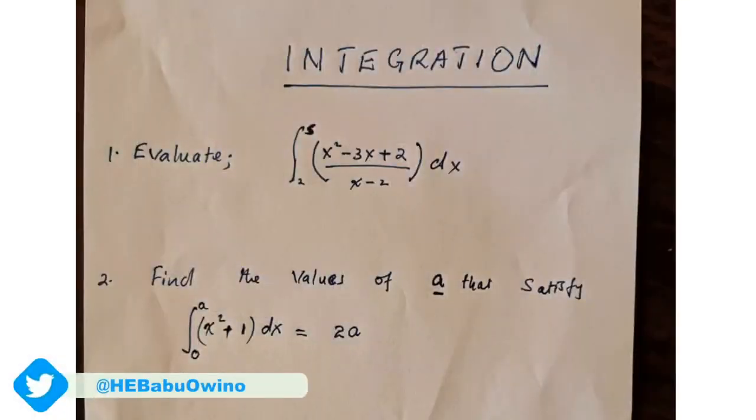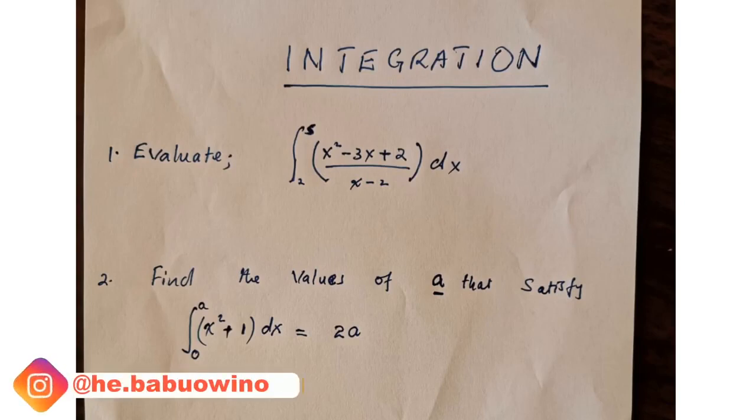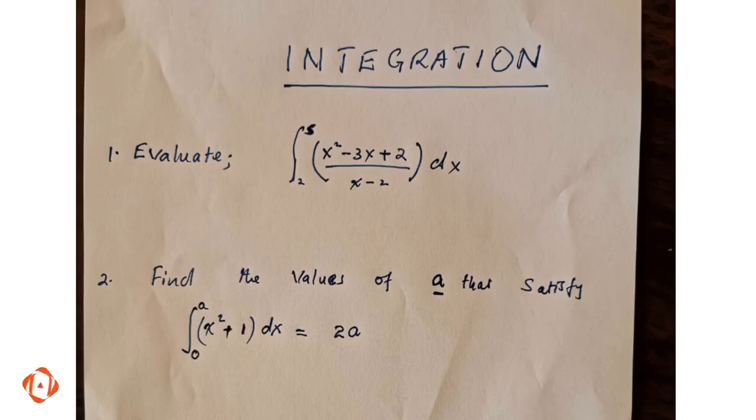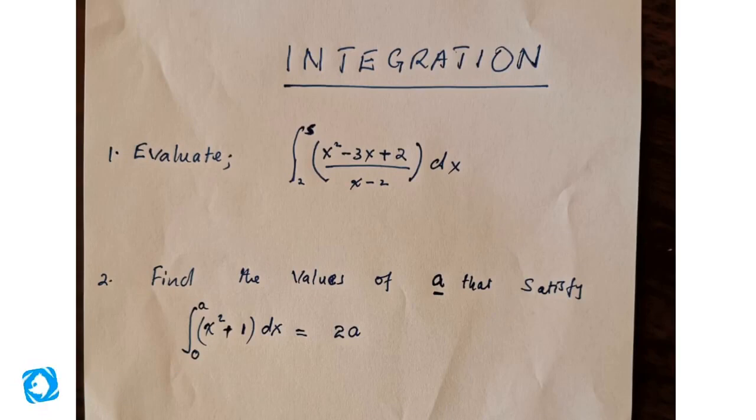Find the value of A. That's question number 12. Find the value of A that satisfies the limits A and 0 of x squared plus 1 dx equals to 2A. I want us to be very careful here. It's just a matter of being keen.